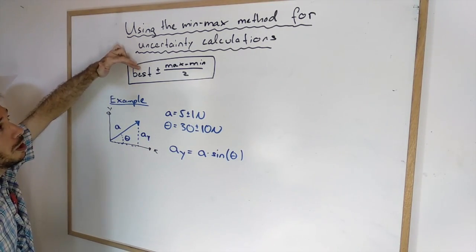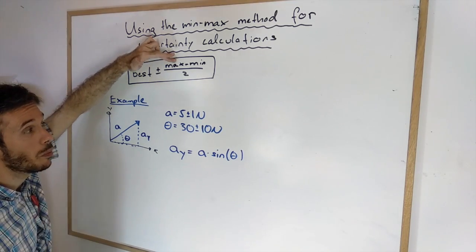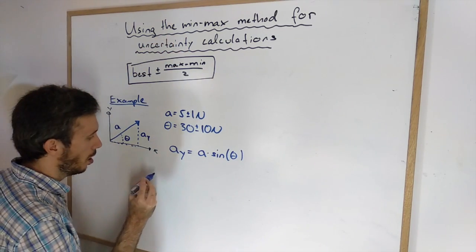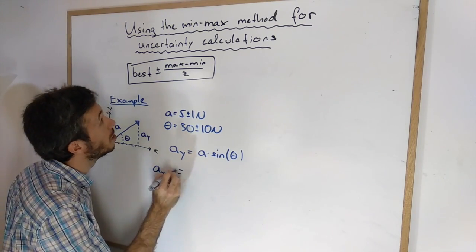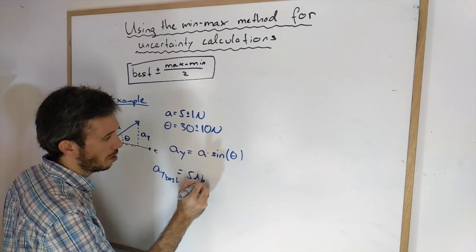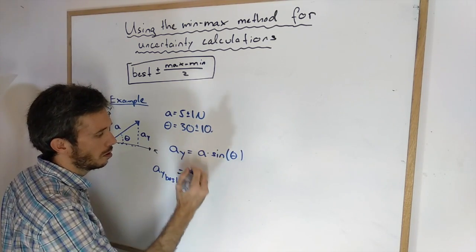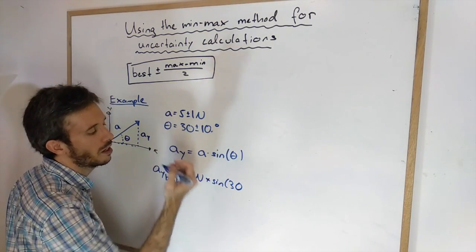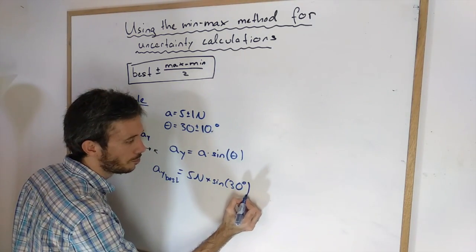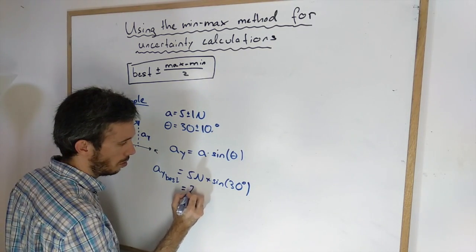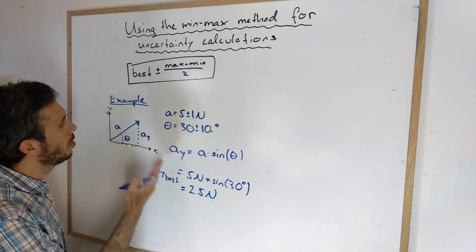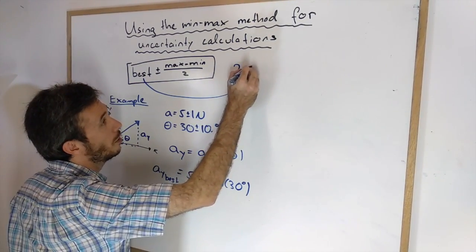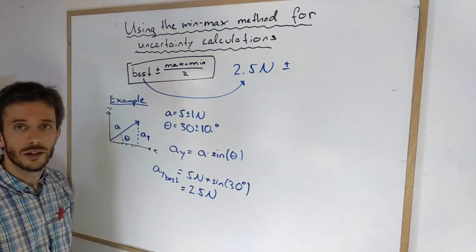We take the best possible value, to that we add and subtract the uncertainty of the maximum possible outcome minus the minimum possible outcome divided by 2. So in my case my a_y best is simply 5 newtons times sine of 30 degrees. I just realized there was a mistake here. Of course the angle is measured in degrees and not in newtons. Which gives me 2.5 newtons. So I know the y component. The best case is 2.5 newtons and now the main question is plus minus how much.